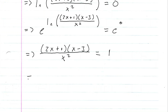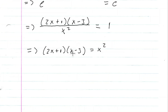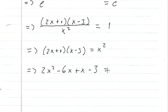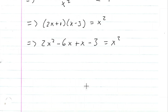Multiplying both sides by x squared gives (2x + 1)(x − 3) = x squared. Distributing: 2x times x is 2x squared, 2x times −3 is −6x, 1 times x is x, and 1 times −3 is −3. To put this in quadratic form — ax squared + bx + c = 0 — I subtract x squared from both sides, giving x squared − 5x − 3 = 0.